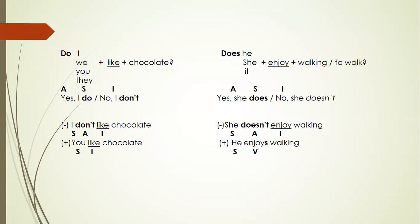Thus, now we have auxiliary 'does', subject is he, she, or it, and the verb in infinitive — 'enjoy', for example. So we say: Does she enjoy walking, or does she enjoy to walk? Yes, she does, or No, she doesn't.